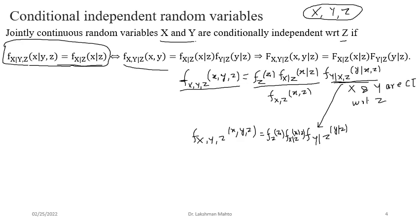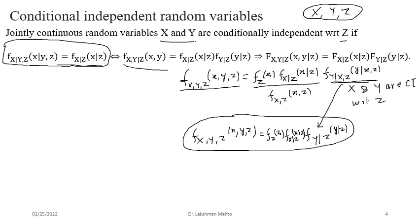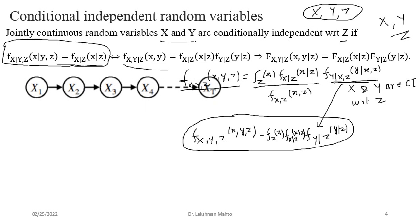Due to the conditional independence of X and Y with respect to Z, the computation of the joint density of X, Y, and Z takes a very simple form. That's why we use the conditional independence approach. It may also be possible that X and Y might be independent, but if you introduce conditioning on Z then X and Y conditionally may become dependent. That example we had already seen in the discrete case — you can recall it from there.